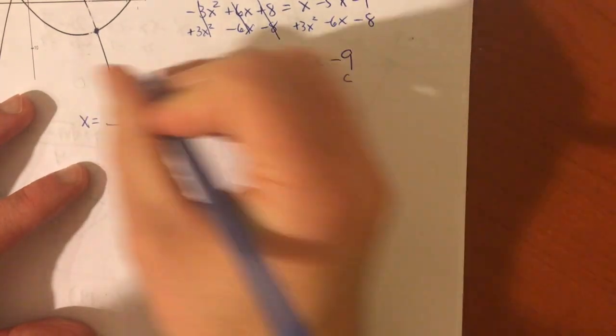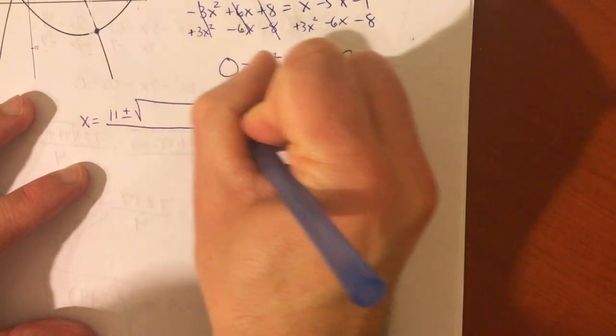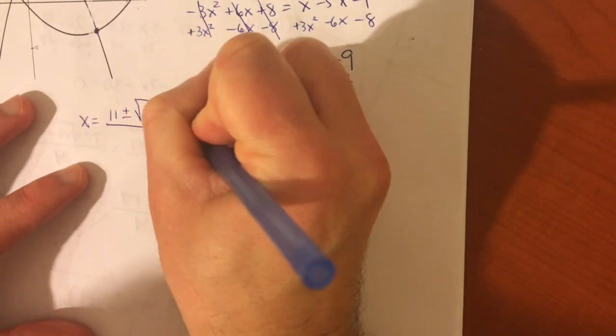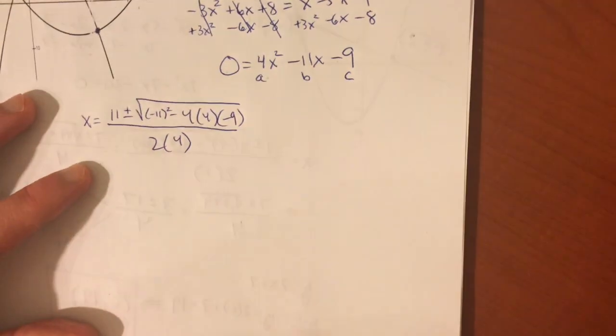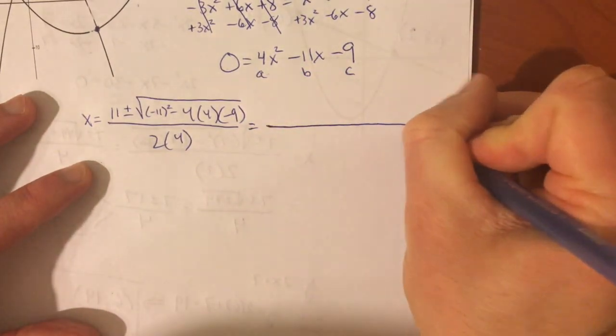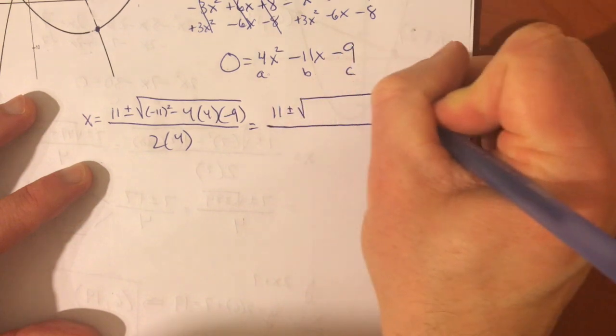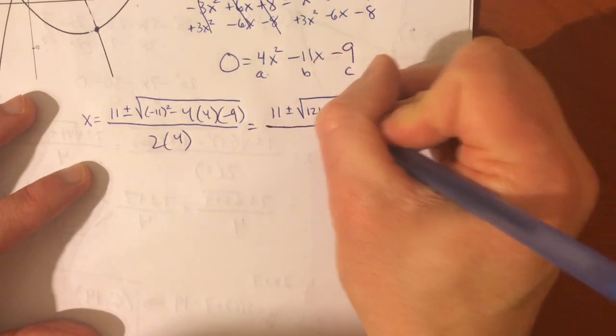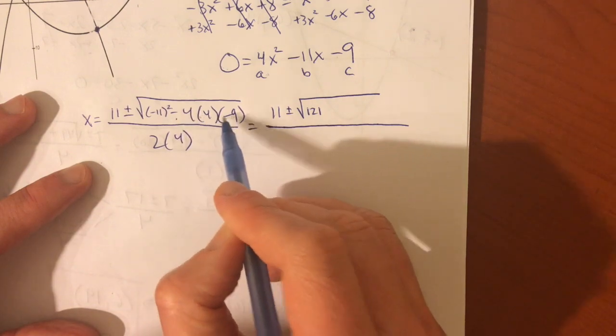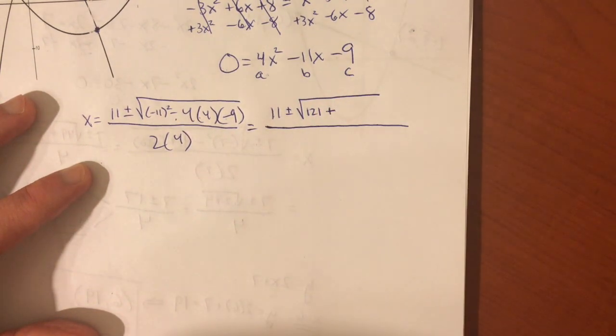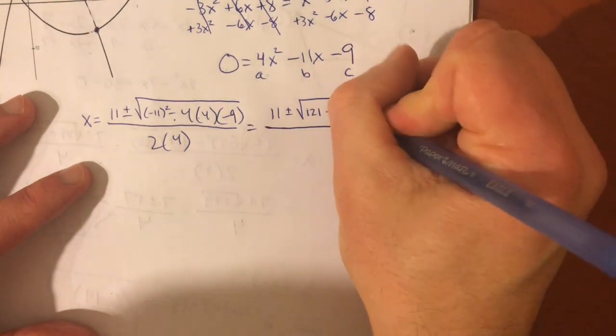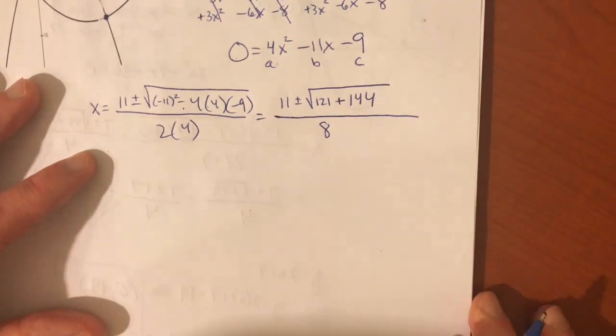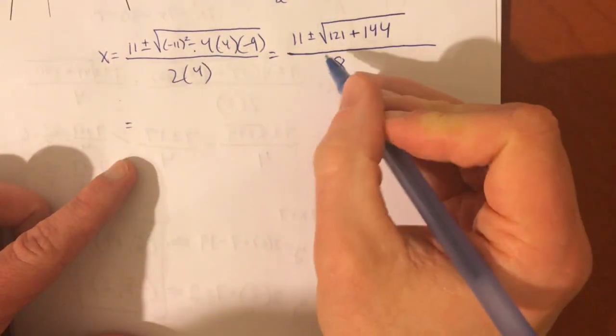So, here we go. x is equal to negative b plus or minus the square root of b squared minus 4ac all over 2a. Let's just simplify here. 11 plus or minus the square root of negative 11 squared positive, 121, negative times positive times negative, that's a positive. And, 4 times 4 times 9, that's 16 times 9. That's 144. And, simplify this on the inside.